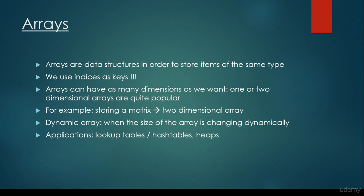In order to store a matrix, we have to use two-dimensional arrays, as we have seen. Basically, an array can be dynamic. It means that the size of the array can be changing dynamically. And the applications of arrays are lookup tables or hash tables or heaps, for example. So several abstract data types use arrays as an underlying data structure.